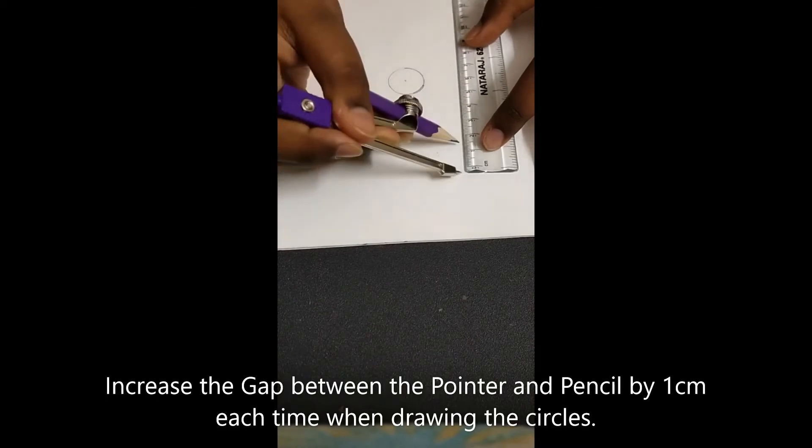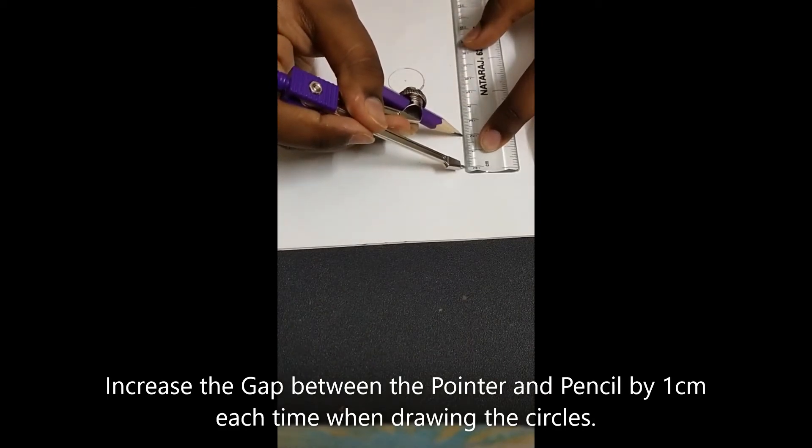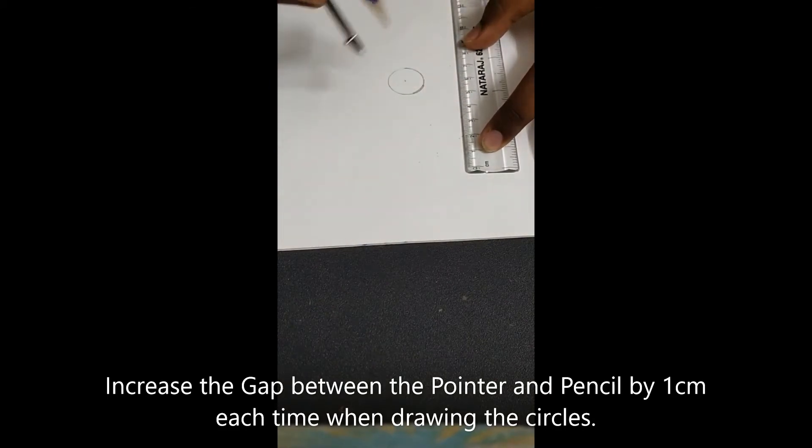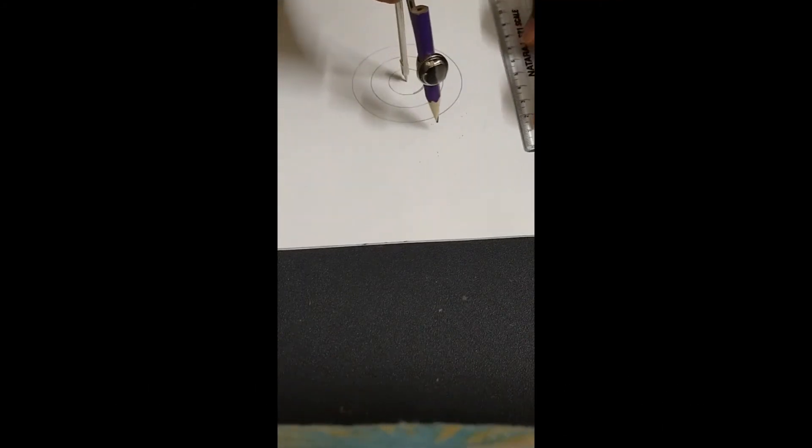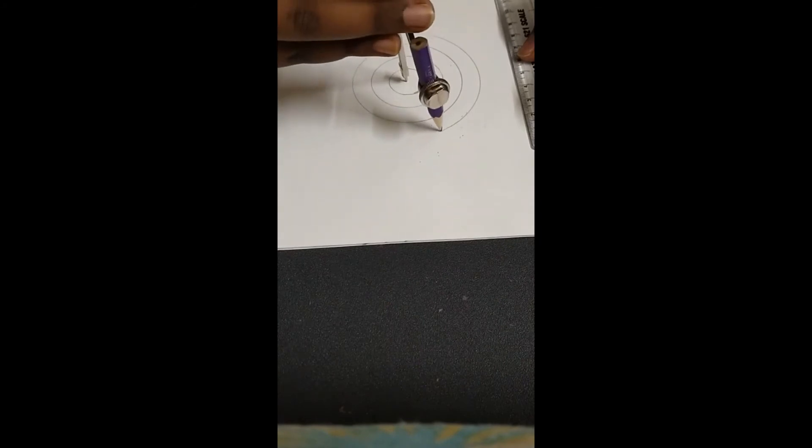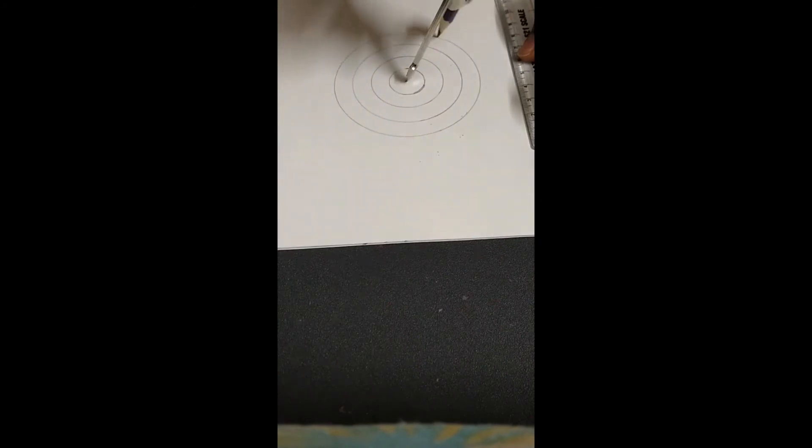Now, let's move on to 2 cm. You have to make the circles lightly, and we will finish all of them one by one. I am finished with my circles.